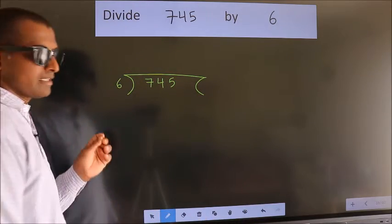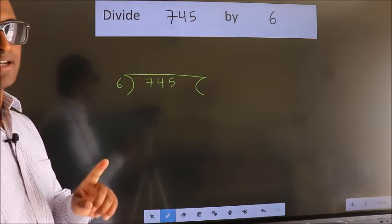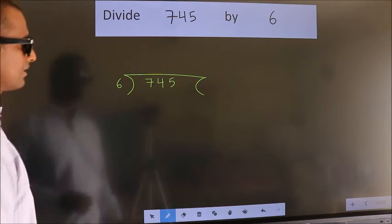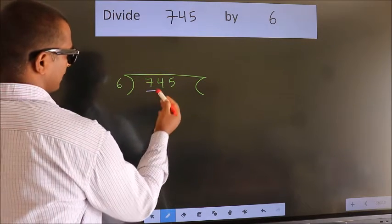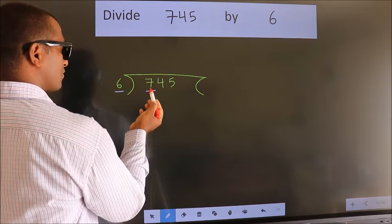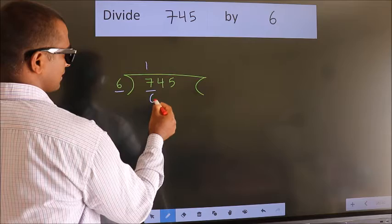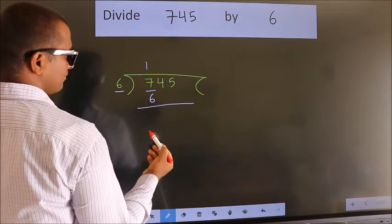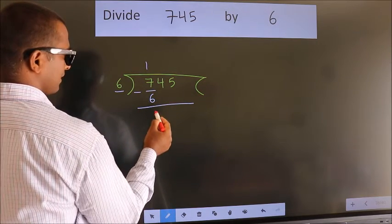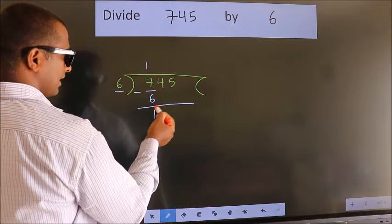This is step 1. Next, here we have 7, here 6. A number close to 7 in the 6 table is 6 ones, 6. Now, we should subtract, we get 1.